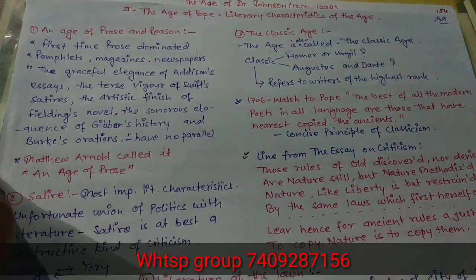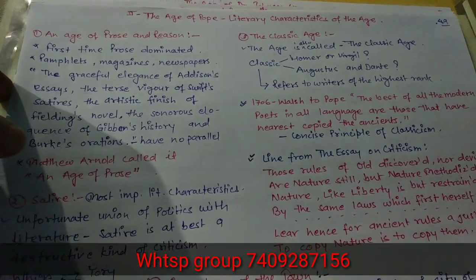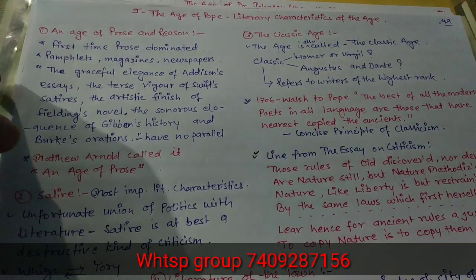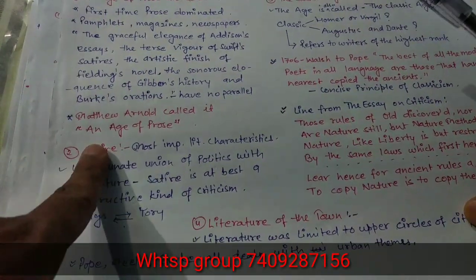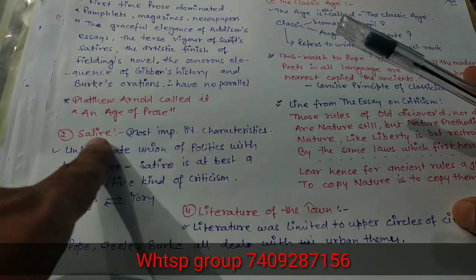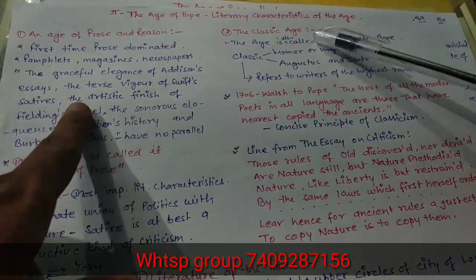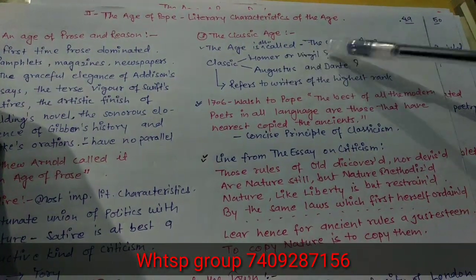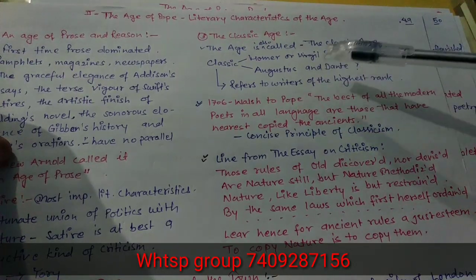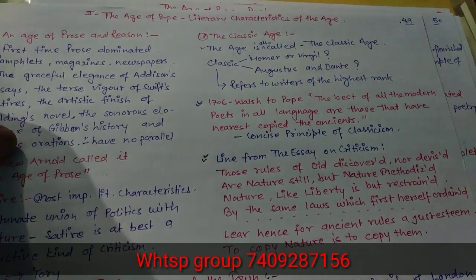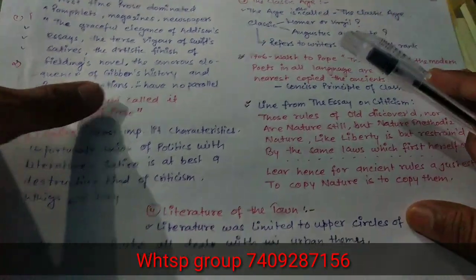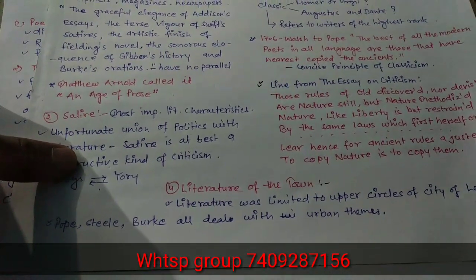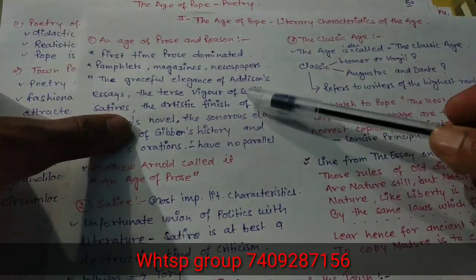There are four or five characteristics. The first one is the Age of Prose and Reason — it is called so, and we will come to know why later. The second is that the dominated genre was satire. Third, it is called the Classic Age. In English literature, classics refer to works by Homer, Virgil, Augustus, and Dante. It is also called the Augustan Age. The dominated theme was literature of the town.